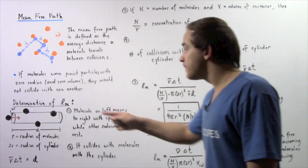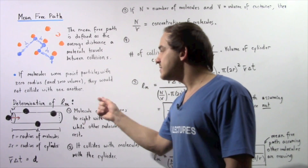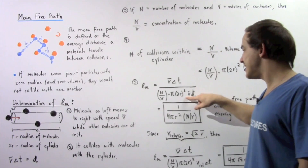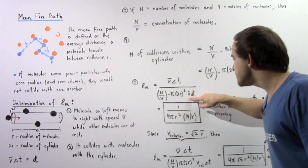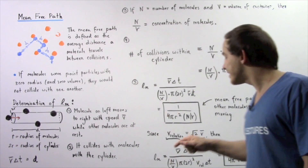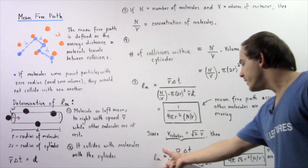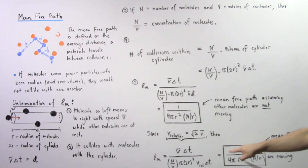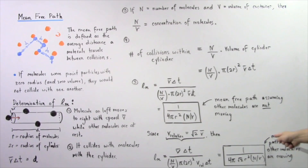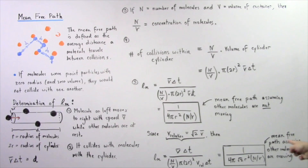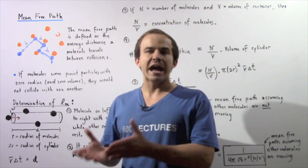But what if the other molecules are in fact moving? Then we must use not the average velocity but the relative velocity. Because the relative velocity equals radical-2 times the average velocity, we plug this into the denominator and obtain the corrected equation: 1 divided by 4·pi·radical-2·R² multiplied by N divided by V. This is the mean free path equation assuming the other molecules are also moving.